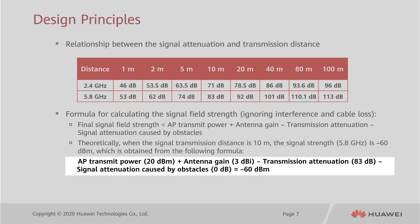Assuming an open environment without obstacles, signal attenuation caused by obstacles is zero. For example, at a transmission distance of 10 meters, the transmission attenuation for 5.8 GHz signals is 83 dB. Assuming the AP transmit power is 20 dBm and antenna gain is 3 dBi, the resulting field strength is minus 60 dBm — the field strength of 5.8 GHz signals at the edge of the 10-meter coverage radius.